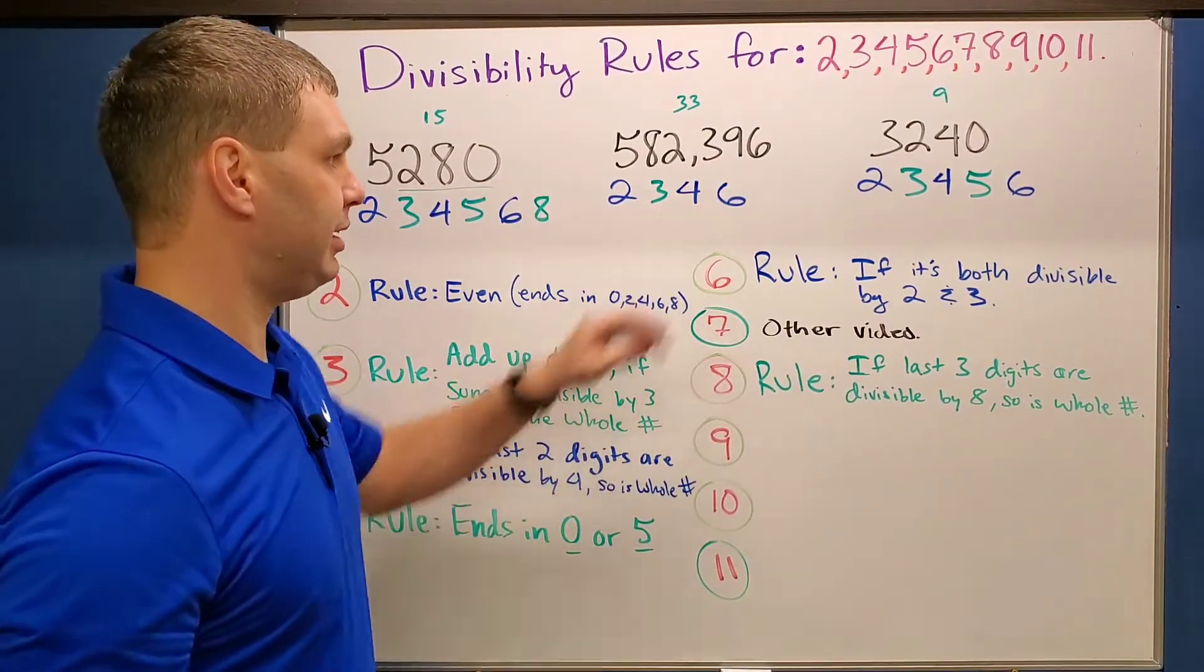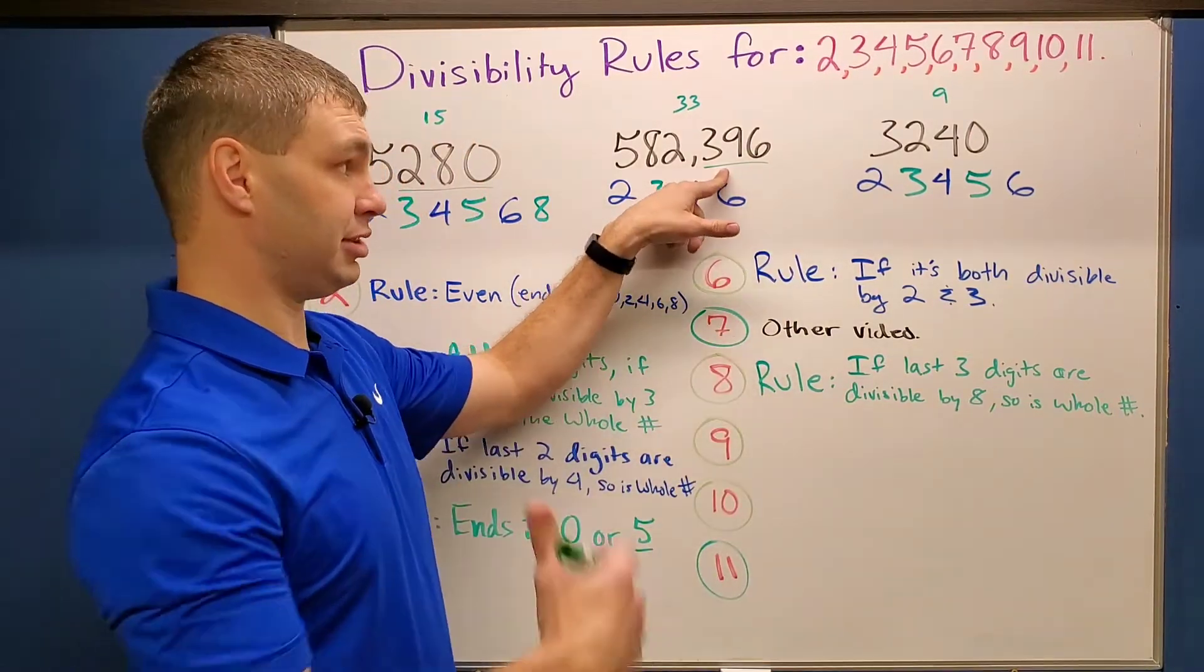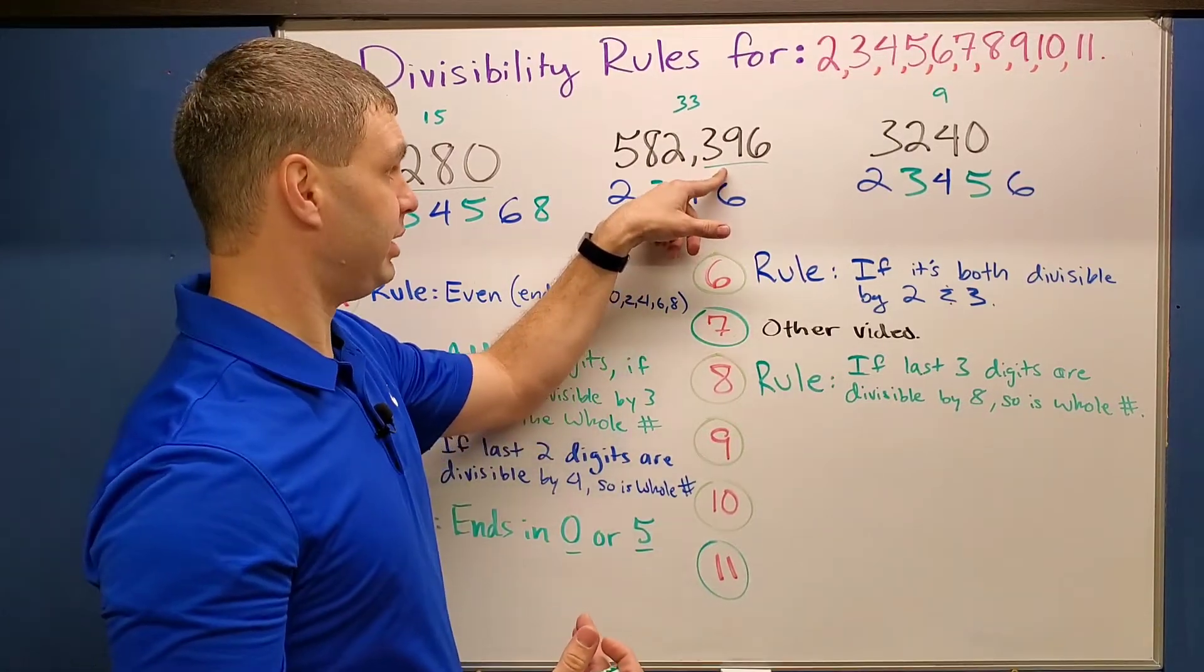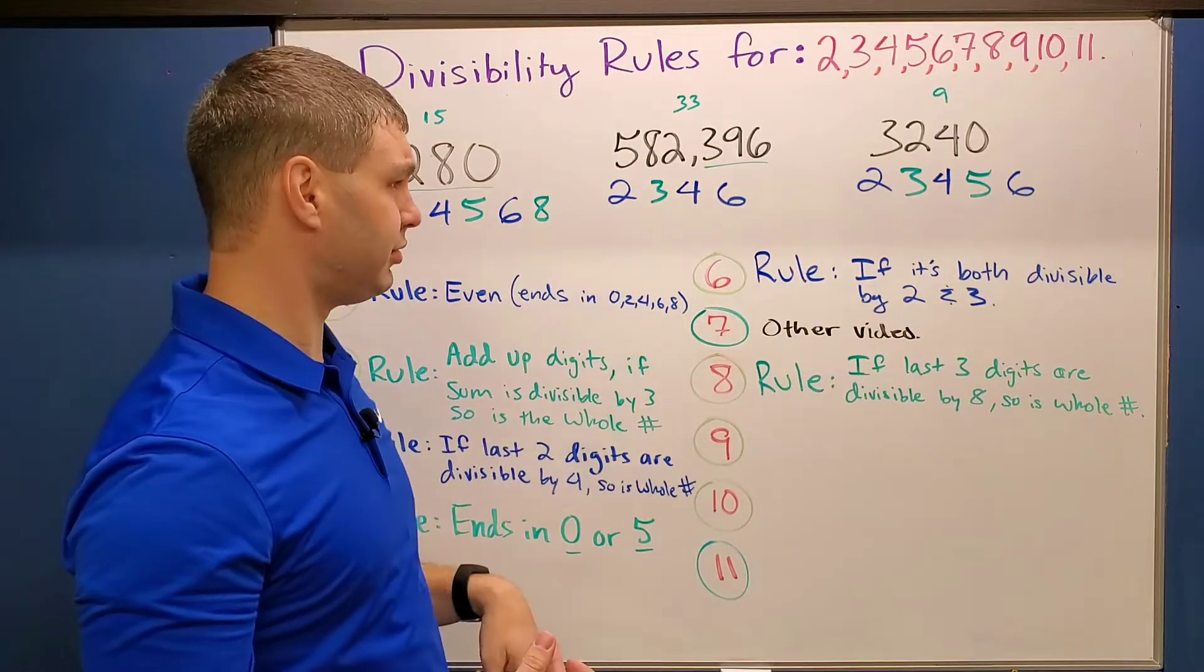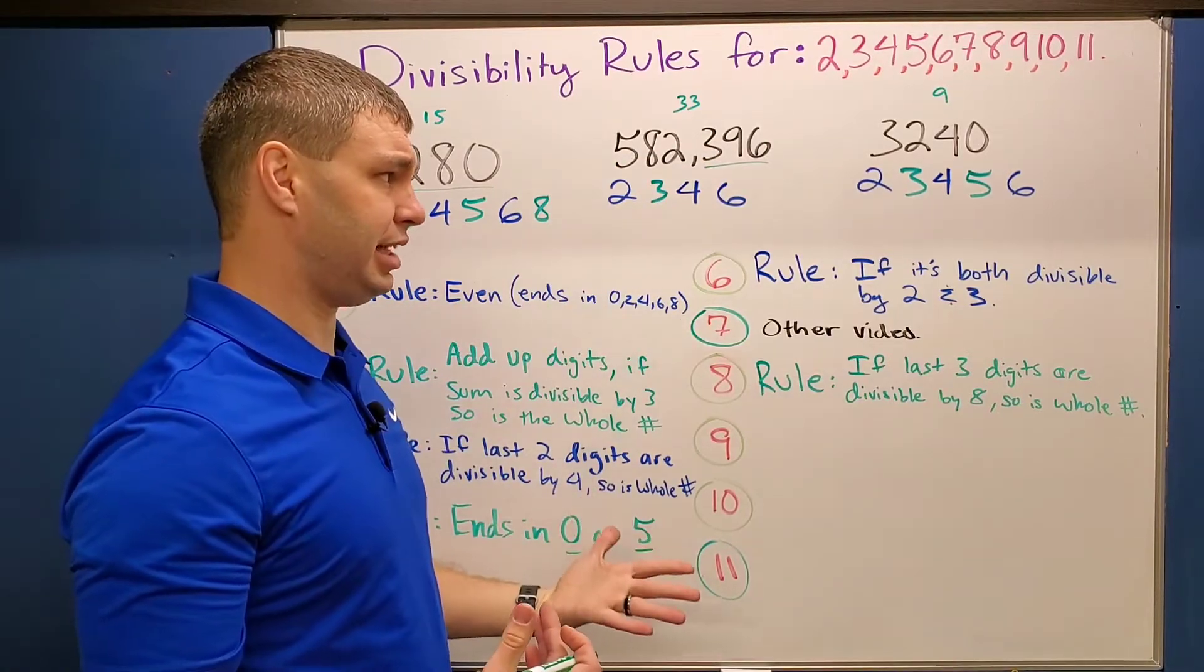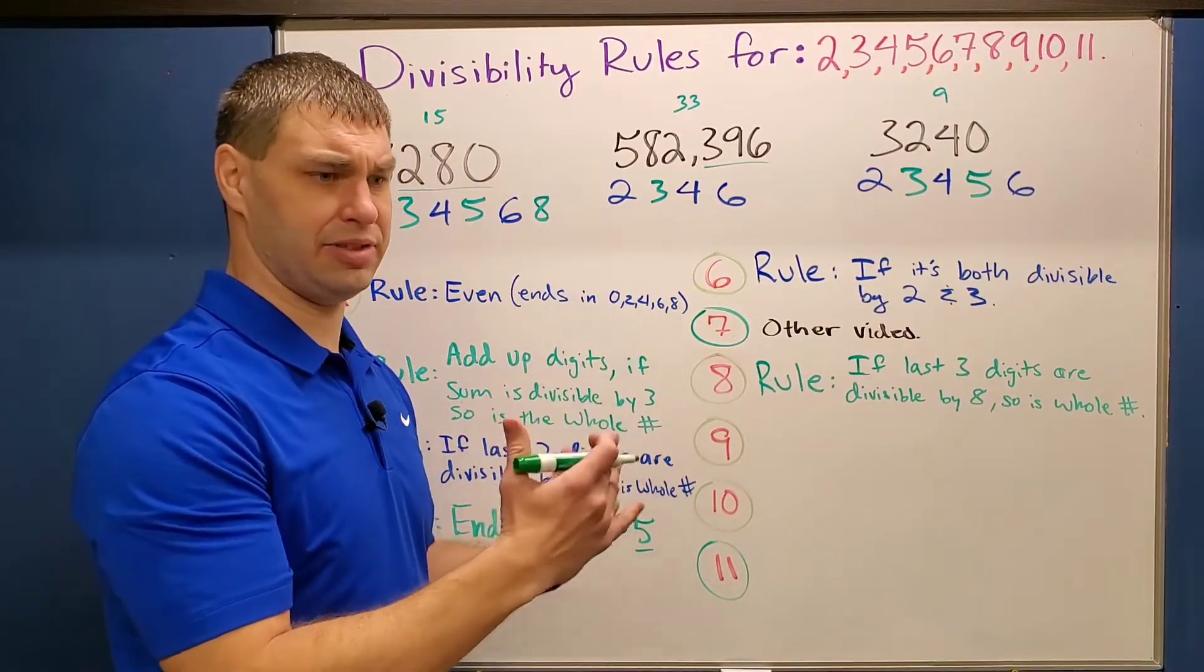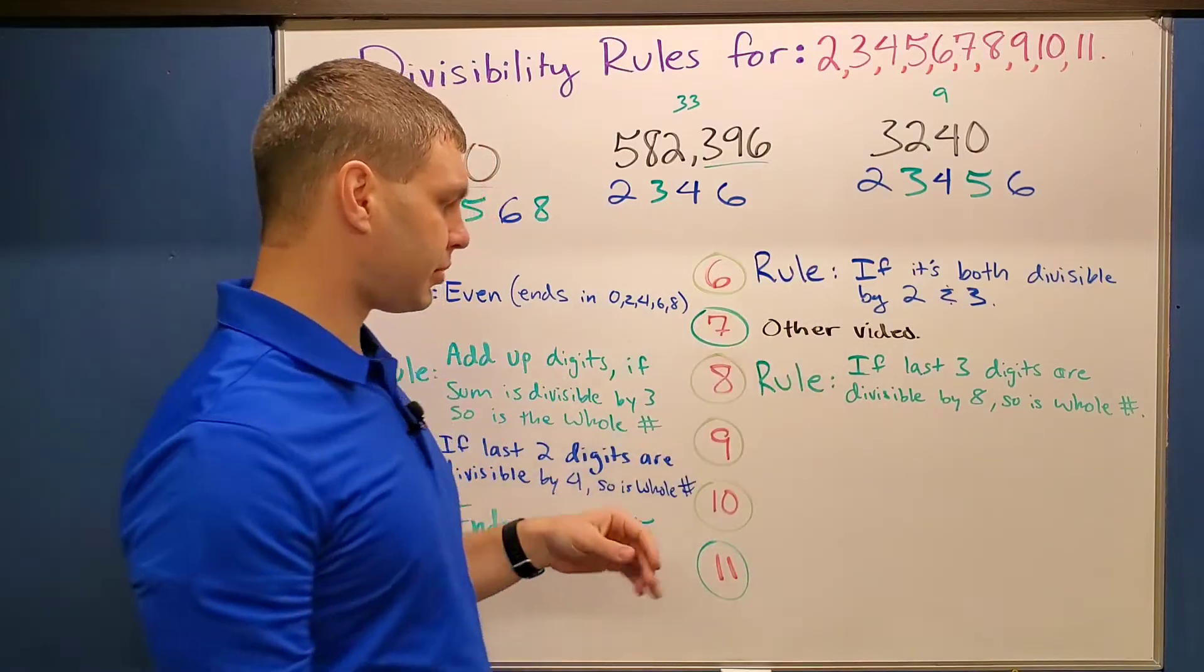What about the next one, 396? Well, eight goes into 39, it goes into 45 times, so it has to go into 39 four times, and that would be 32, leaving you with 76 left over. Let's see, I know that goes into 80 10 times, so 76, there's a difference of four there, so I don't think that's going to work for our second number.